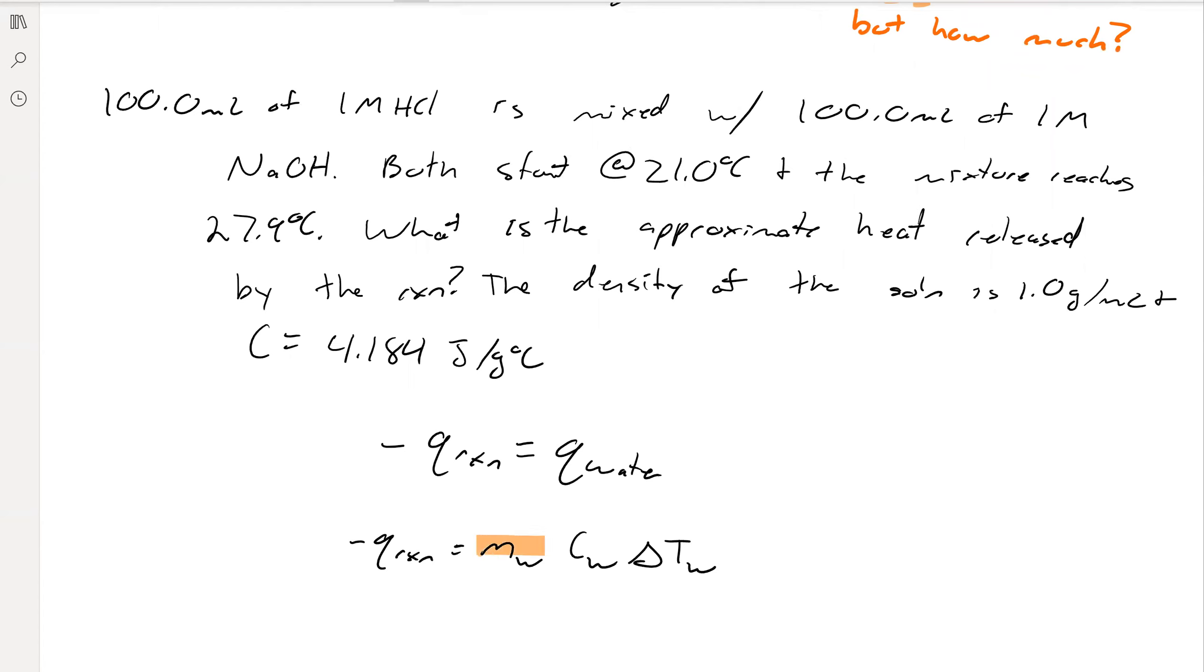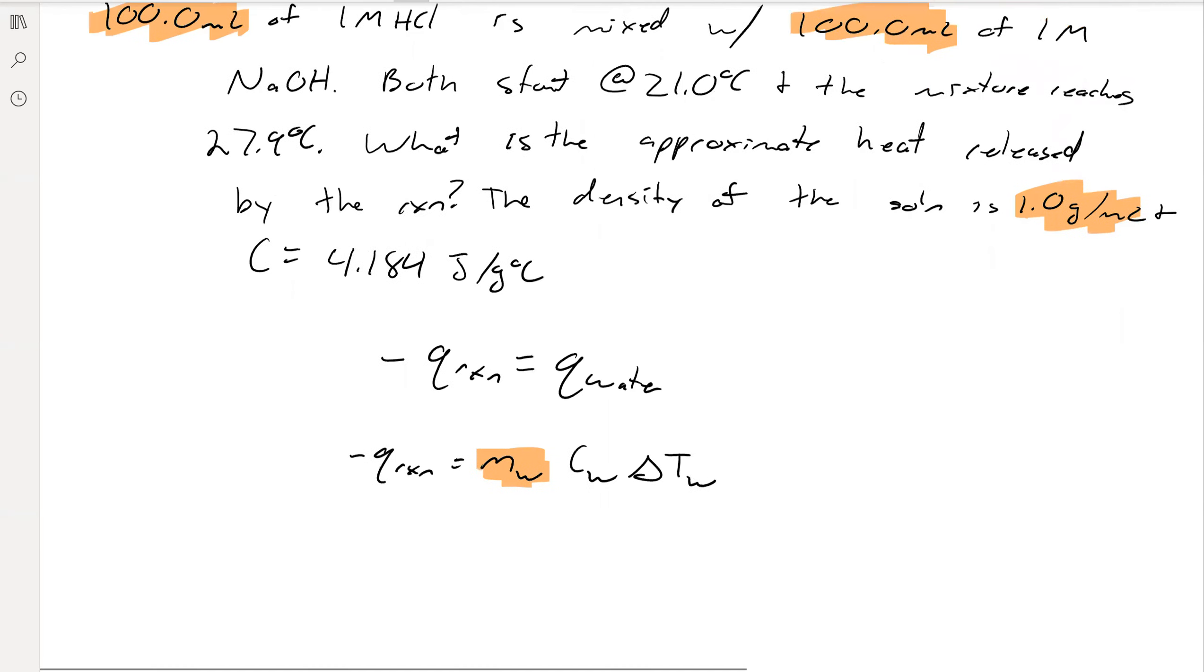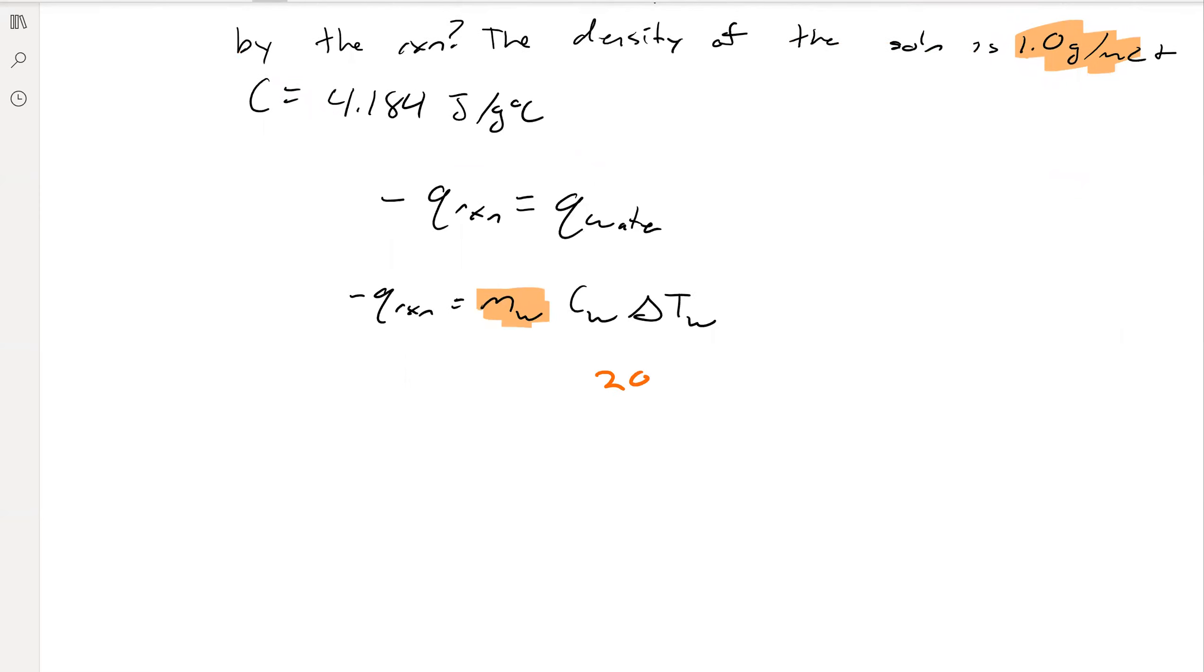We want to think about all of our units here. Our mass of water: we have 100 mL plus 100 mL, that's 200 mL together, and we have the density of 1 gram per 1 milliliter. So we have 200.0 mL times 1 gram per 1 mL, we'll end up with 200 grams of water. The specific heat of water we know is 4.184 joules per gram degree Celsius.